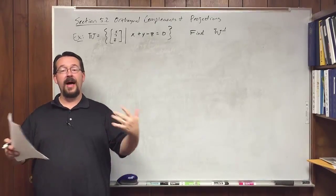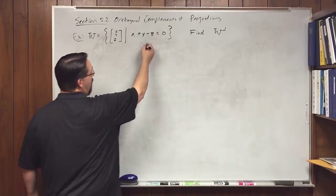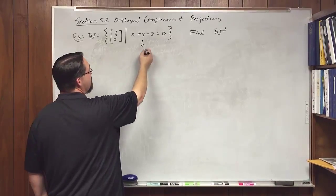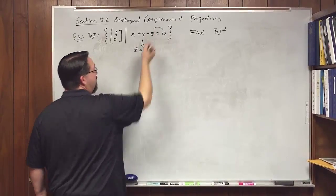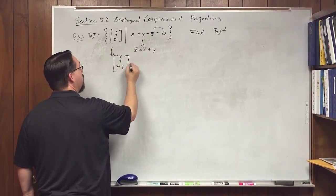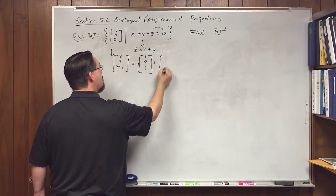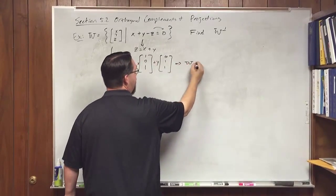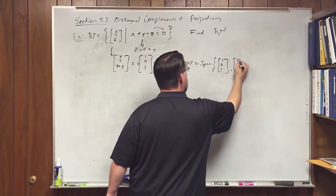When you're given a condition on W, how do you find the orthogonal complement in general? Take this constraint and write the general form of a vector in W. Since z equals x plus y, every vector in W has the form (x, y, x+y), which equals x·(1,0,1) plus y·(0,1,1). So W is the span of (1,0,1) and (0,1,1).